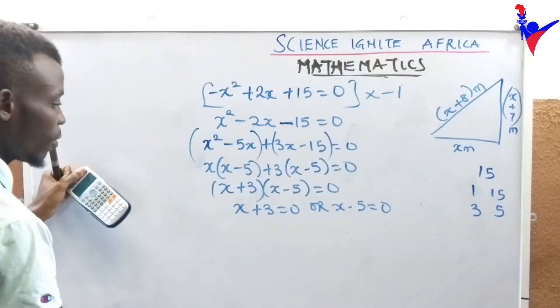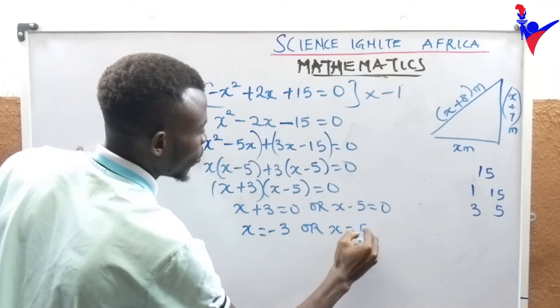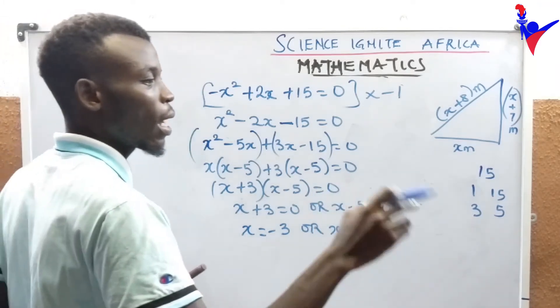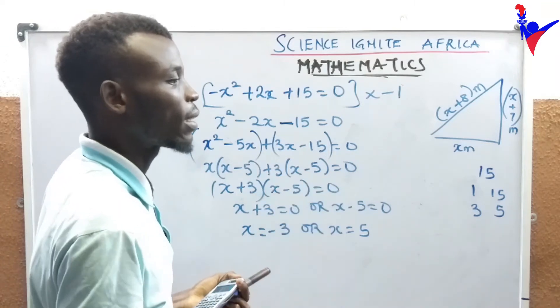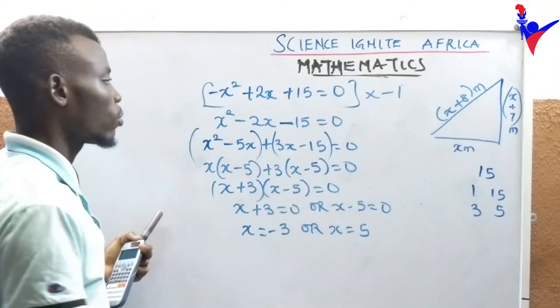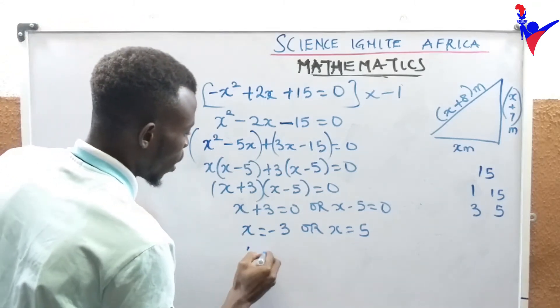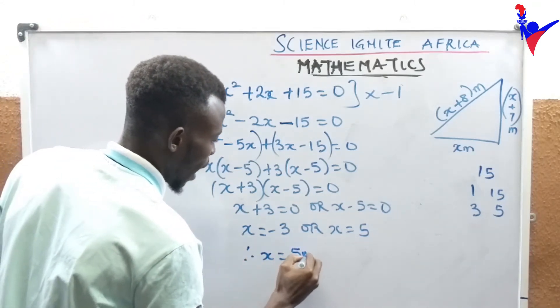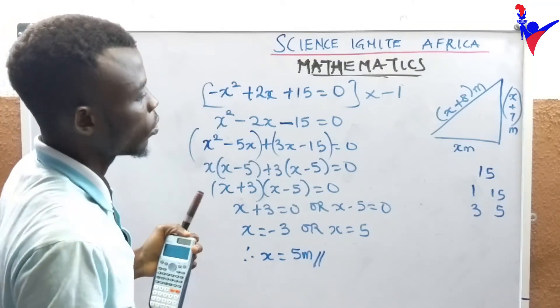Then we have x equals minus 3 or x equals 5. Calculate in meters the value of x. Here we have to choose the positive answer, therefore x equals 5 meters.